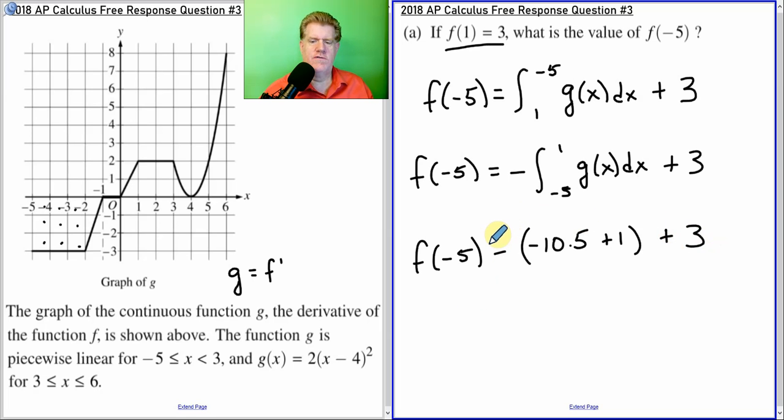So, little calculations. We'll have to put my equal sign there. So, negative 10.5 plus 1 is negative 9.5. The opposite of that. Add them together, and we get 12 and a half. So, f of negative 5 equals 12 and a half.